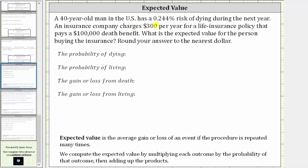A 40-year-old man in the U.S. has a 0.244% risk of dying during the next year. An insurance company charges $300 per year for a life insurance policy that pays a $100,000 death benefit. What is the expected value for the person buying the insurance? Round your answer to the nearest dollar.